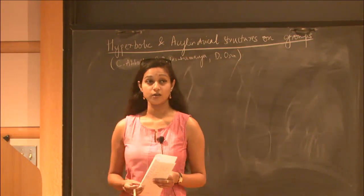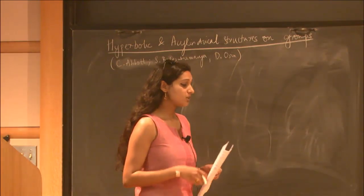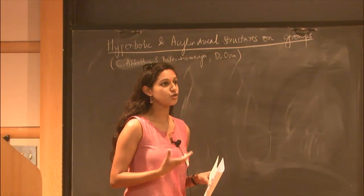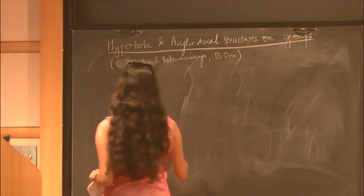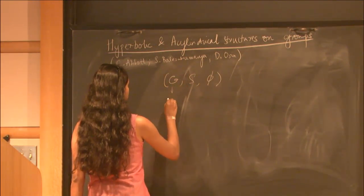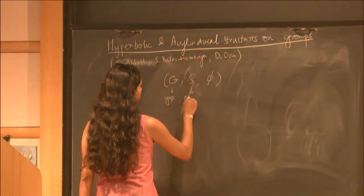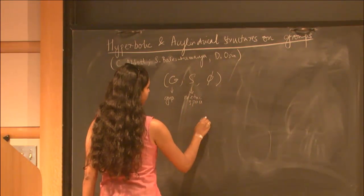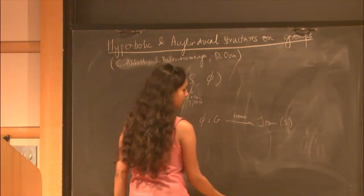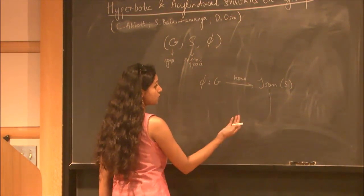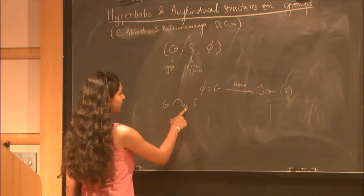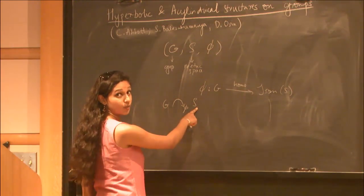One of the techniques we use in geometric group theory to try and understand the behavior of groups better is to consider actions of our group on metric spaces, see what that group action looks like, and try and derive information about our group from that action. For this talk, when I talk about a group action I mean a triplet G, S, and φ, where G is a group, S is a metric space, and the map φ from G into the set of isometries of S is a homomorphism. So in particular, actions for me are always isometric actions — they're distance preserving. The notation is that G acts on S where the map φ tells us exactly how elements of our group are mapped to isometries.